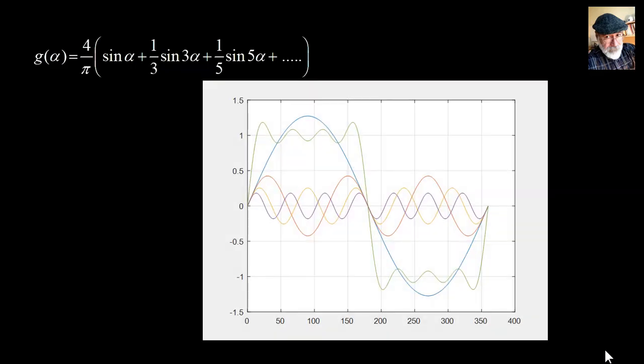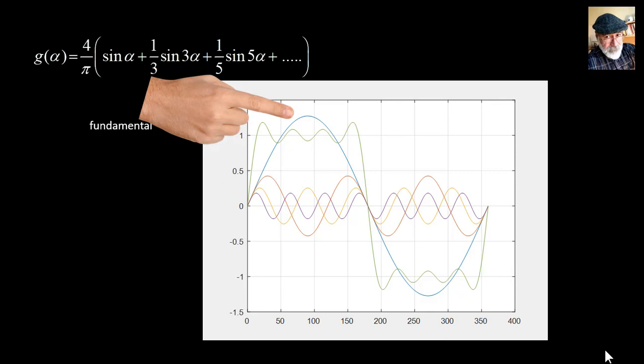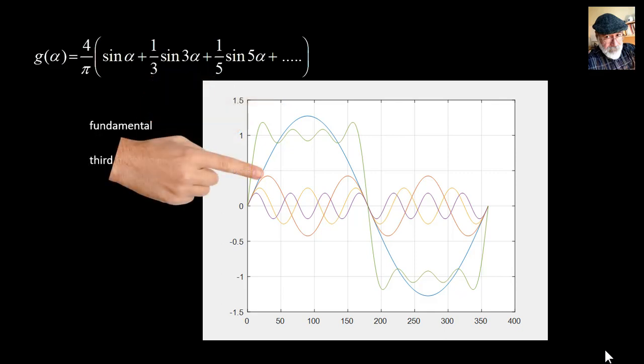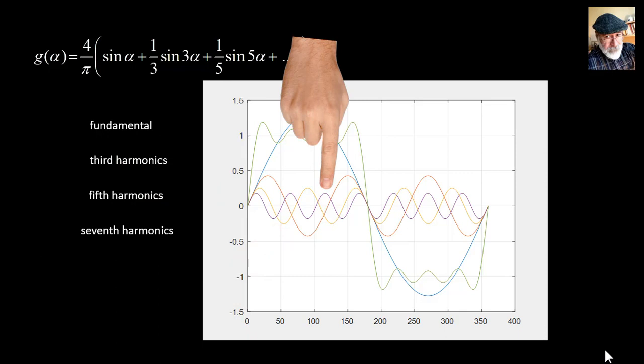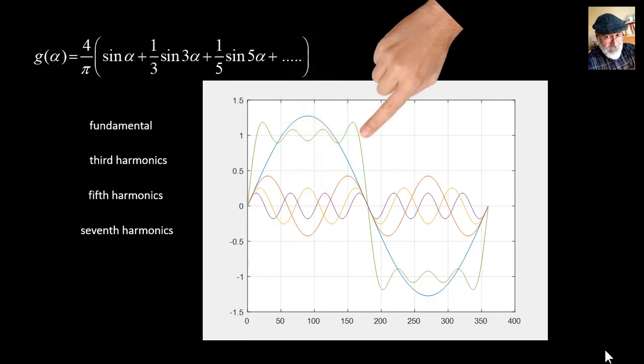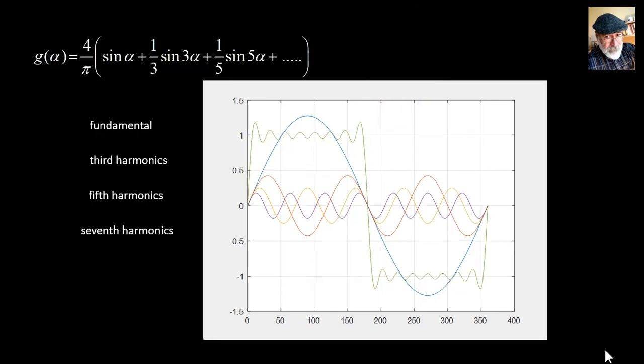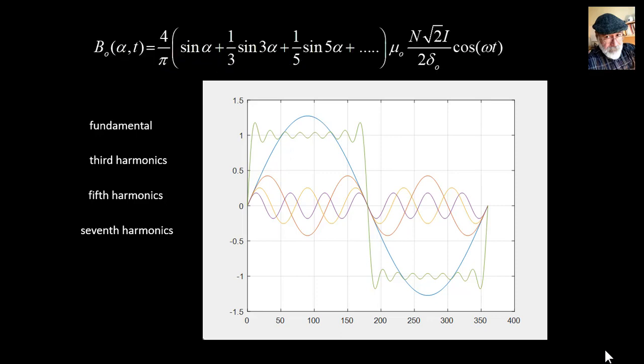If we plot them together in this diagram, we see the fundamental component up here, 4 over pi. And then here is the third harmonic, one third of the height of the fundamental, the fifth harmonic, the seventh harmonic, and so on. What we see here is the sum of those four curves. It starts to look squarish. If we add two more components, the ninth and the eleventh harmonics, it looks like that.